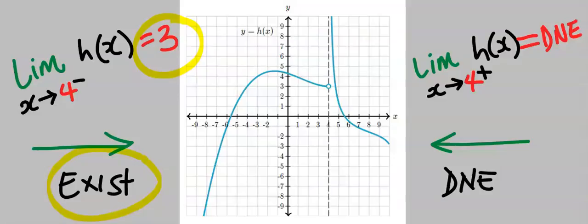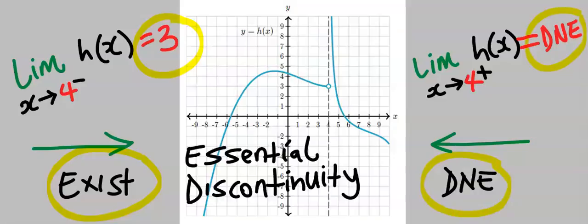Whenever one side of the limit exists and the other side does not exist, this is known as essential discontinuity.